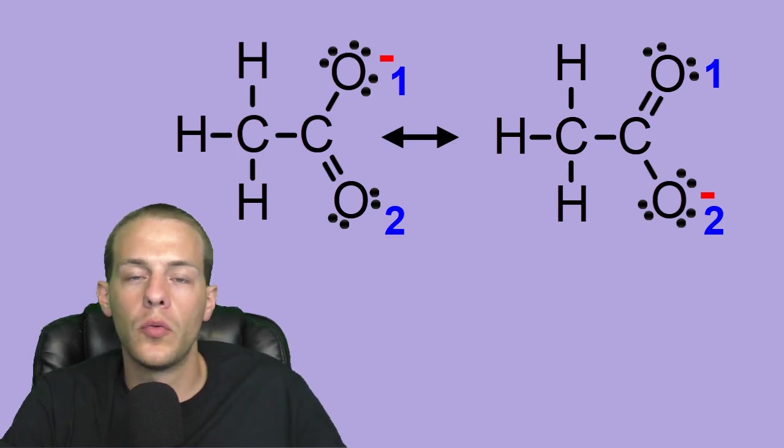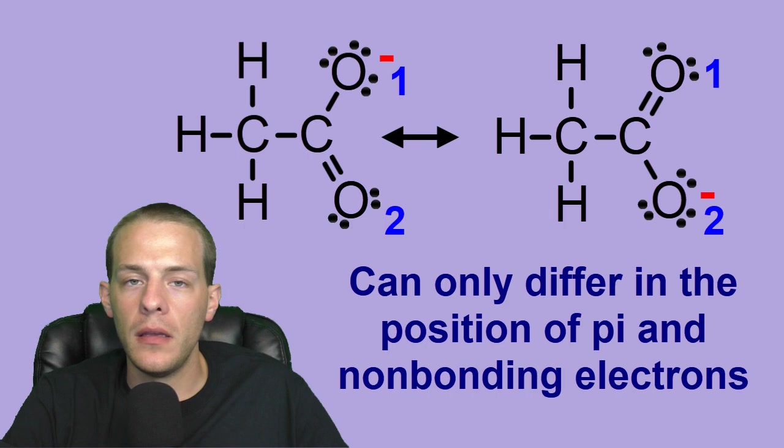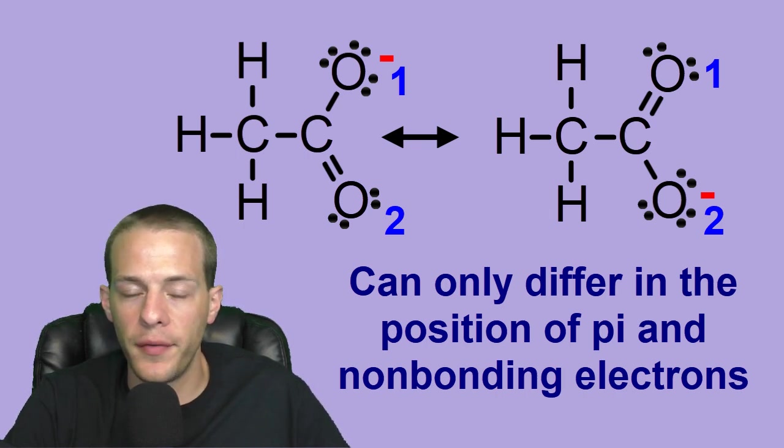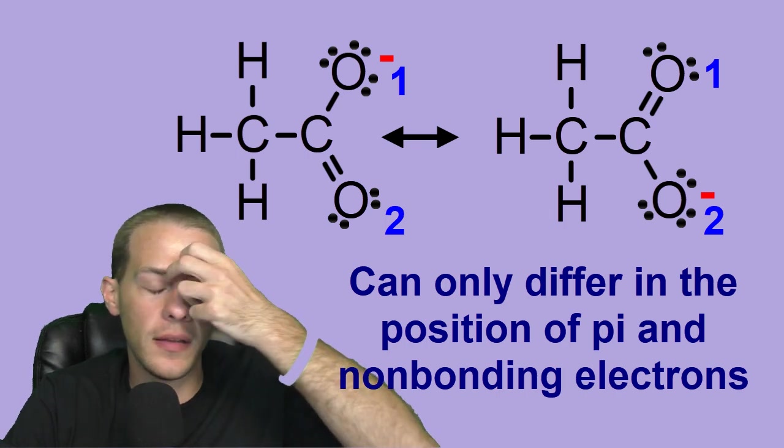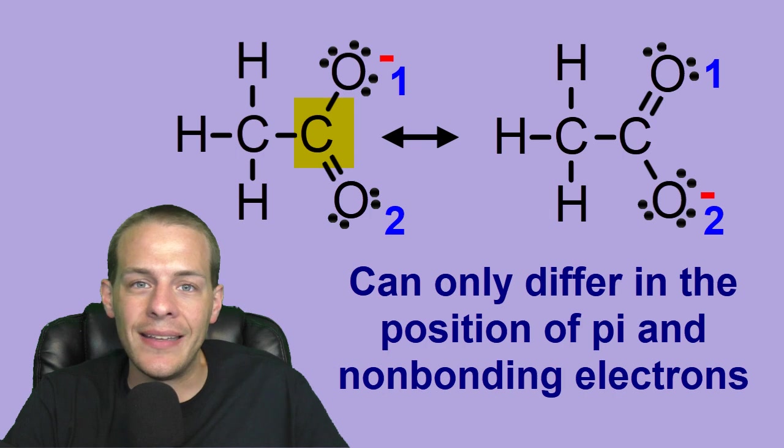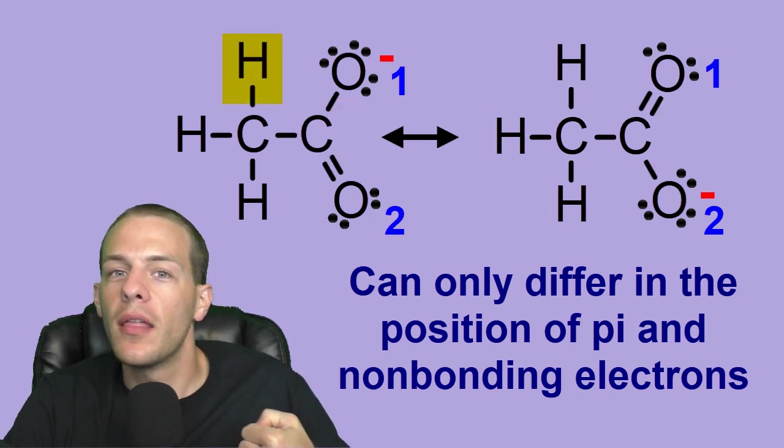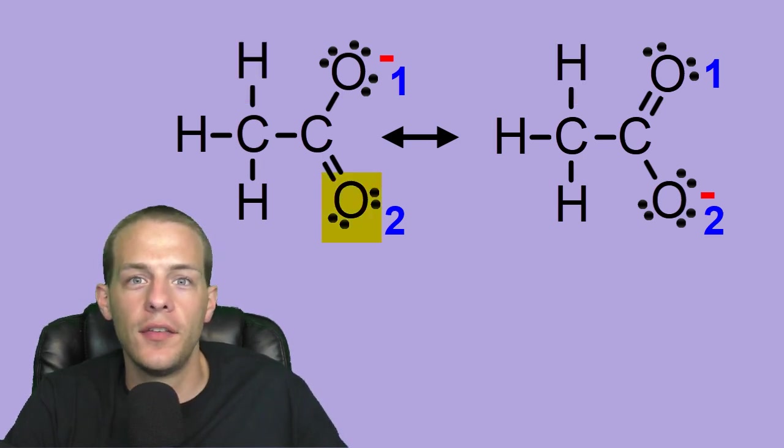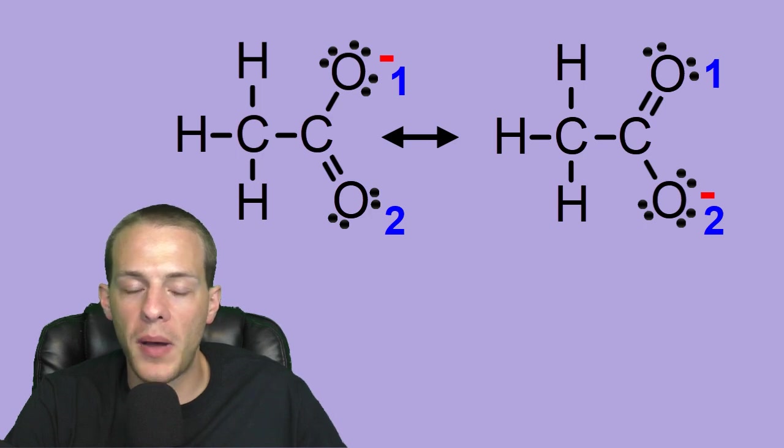So that brings me into the first rule of resonance structures, which is that resonance structures only differ in the position of pi electrons. In other words, electrons that belong to pi bonds and non-bonding electrons, which are lone pair electrons. So again, resonance forms can only differ in the position of pi and non-bonding electrons. Everything else about them has to be exactly the same. It has to be the same atoms connected to the same atoms and all of the atoms are going to be shown in the exact same place. So in other words, that carbon is that carbon. That hydrogen is that hydrogen. That oxygen is that oxygen. These are two forms that represent the same exact structure. So that's rule number one. They can only differ in the position of pi and non-bonding electrons.